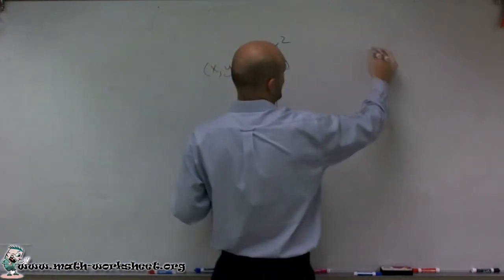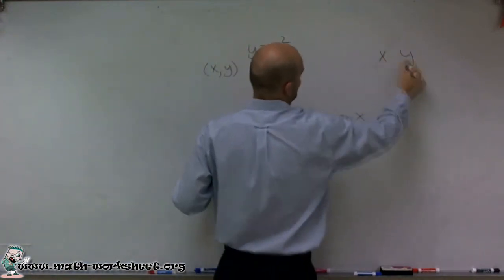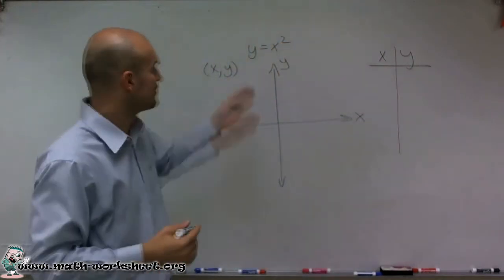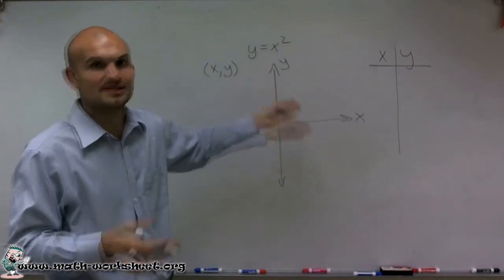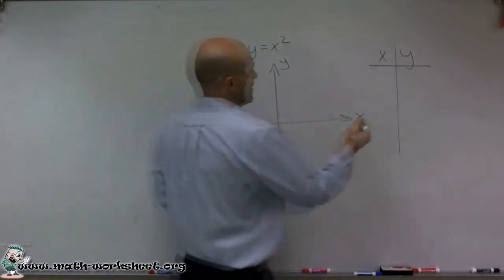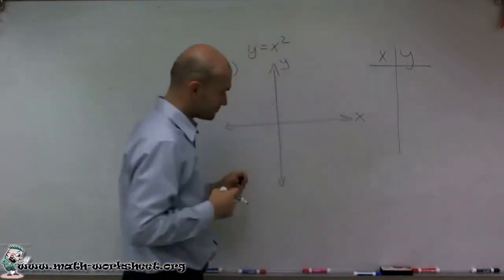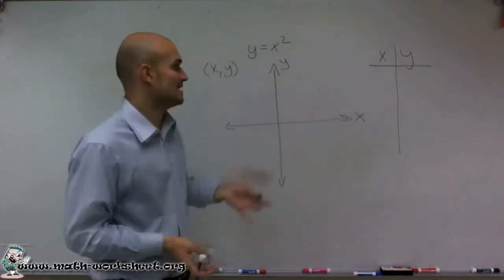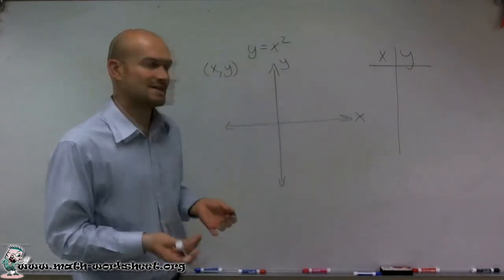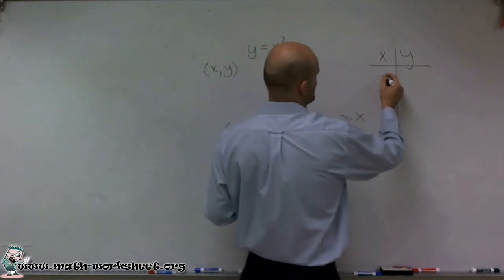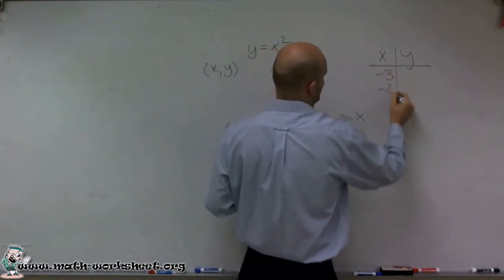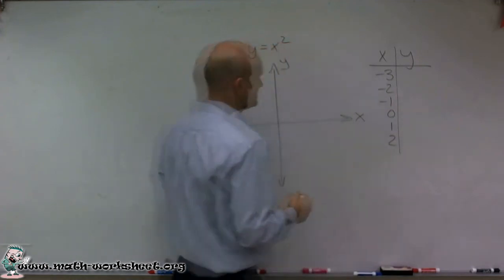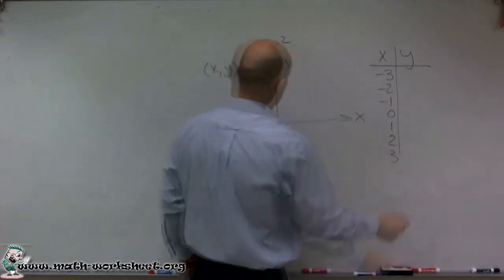So let's take a look here. When creating a table, you can really pick any points that you want for your x-coordinates to then get your y-coordinates. However, it is important that you do want to make sure you include some positive and some negative. So for y equals x squared, I'm going to start with negative 3, negative 2, negative 1, 0, 1, 2, and 3.